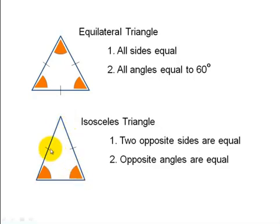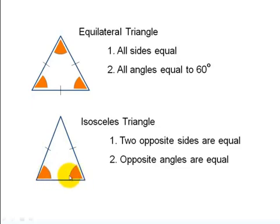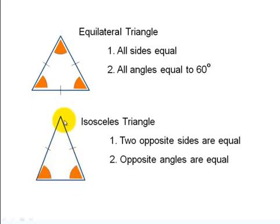Because two sides of the isosceles triangle are equal, the angles at the base of those two equal sides are also equal. So when you trace back to the base of the two equal lines, the angles at those base points are equal.